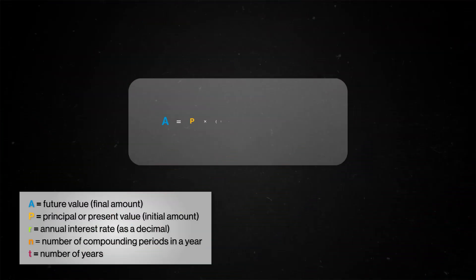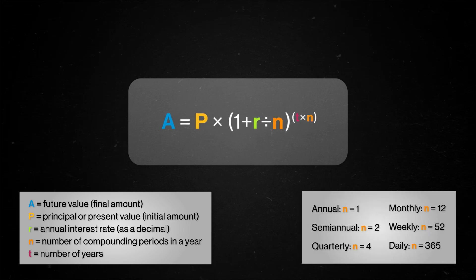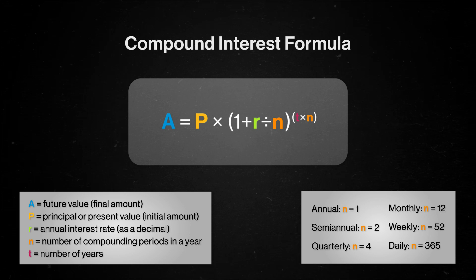We can use the same reasoning for different compounding periods. For instance, some short-term loans have daily compounding rates, which can cost the borrower a lot of money over a short period of time. In that case, the formula changes so the effective interest rate is adjusted for the number of days in the year, and the exponent becomes the total number of days — t multiplied by the number of days in a year. The general pattern depends on the number of compounding periods in a year, which we call n. We can use n to stand in for any compounding period in our formula — this is what we call the compound interest formula.